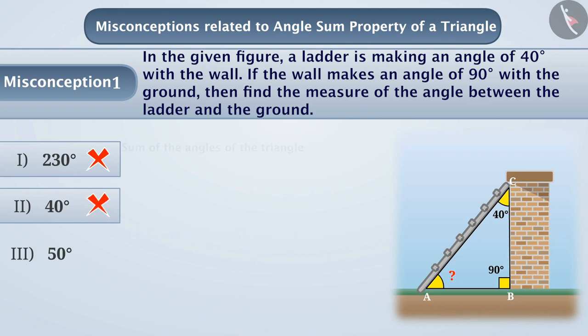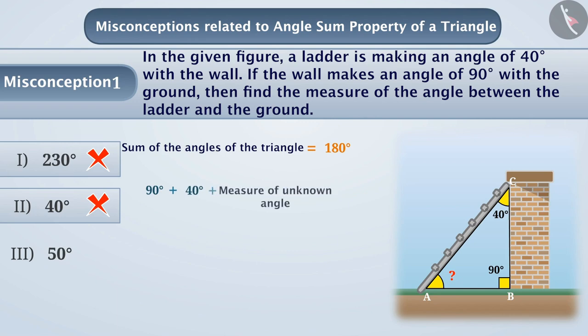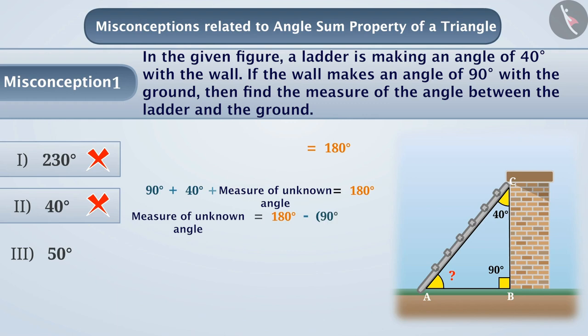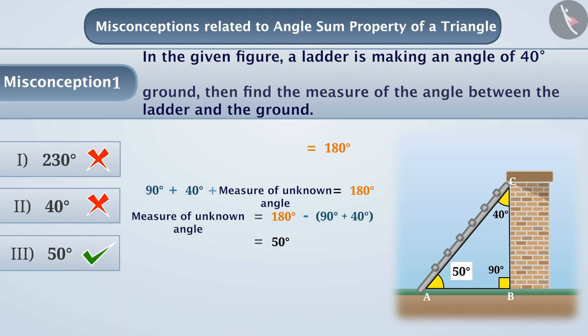The correct understanding is that we can apply the angle sum property of a triangle, which tells us that the sum of angles of a triangle is equal to 180 degrees. So we can say that 90 degrees plus 40 degrees plus the unknown angle equals 180 degrees. Therefore, the measure of the unknown angle is equal to 180 degrees minus 90 degrees minus 40 degrees, which equals 50 degrees. The correct answer is option 3.